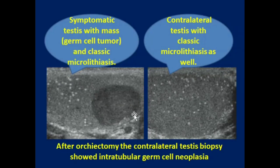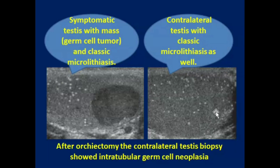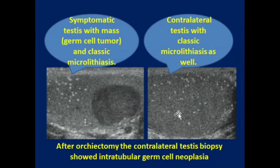This image shows a hypoechoic mass of the testicle, which was revealed to be a germ cell tumor. This tumor is accompanied by classic microlithiasis. The contralateral testis with classic microlithiasis is also present. After orchiectomy, the contralateral testicle biopsy showed intratubular germ cell tumor.